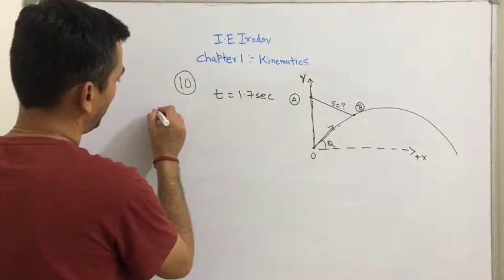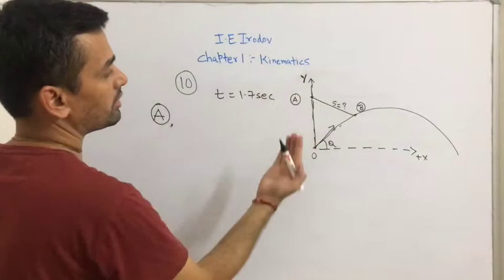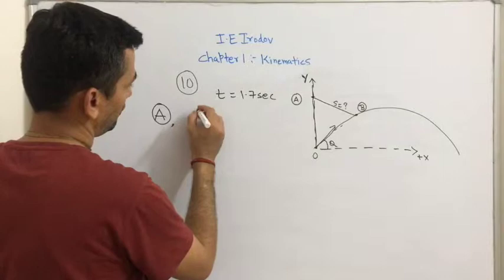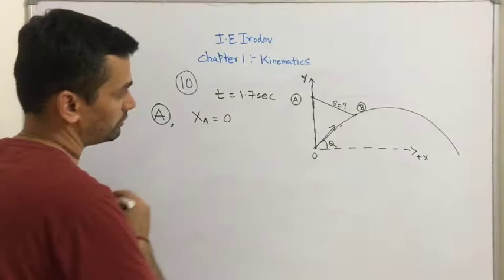First is for body A. Body A only has a vertical component. So the x coordinate for A is always 0.